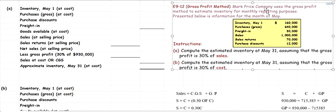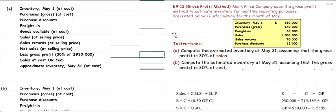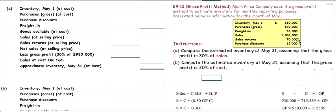Mark Price Company has used the gross profit method to estimate its inventory for monthly reporting purposes. Some information for the month of May is given: inventory on May 1 (beginning inventory), gross purchases of $640,000, freight-in of $30,000 (transportation cost to bring purchased products to the facility), gross sales of one million dollars, sales returns of $70,000, and a purchase discount of $12,000.